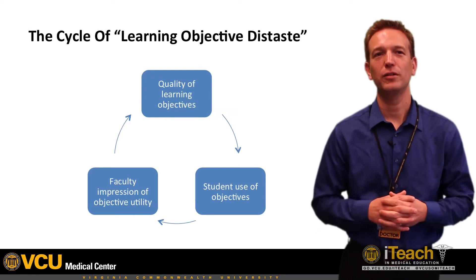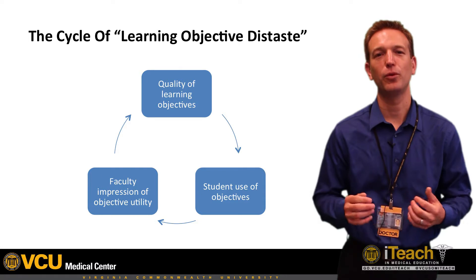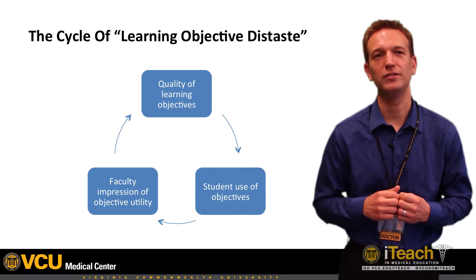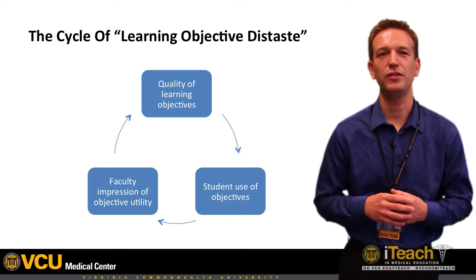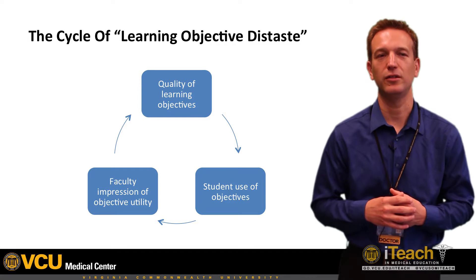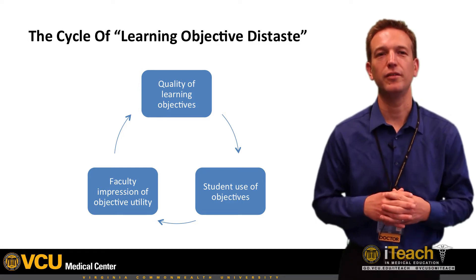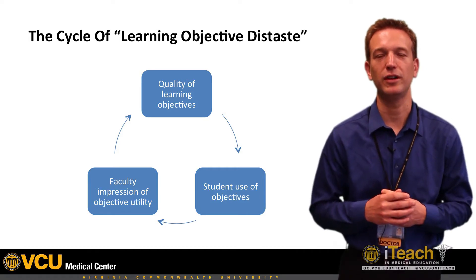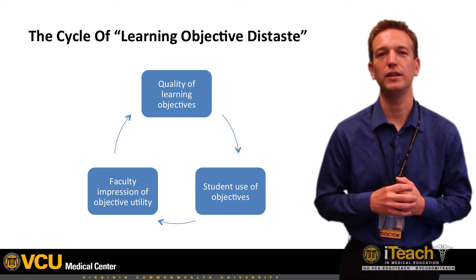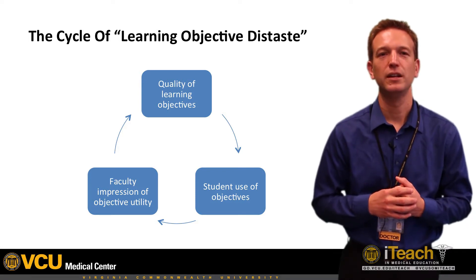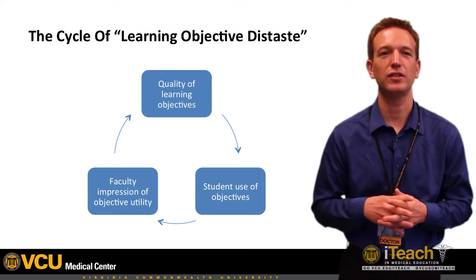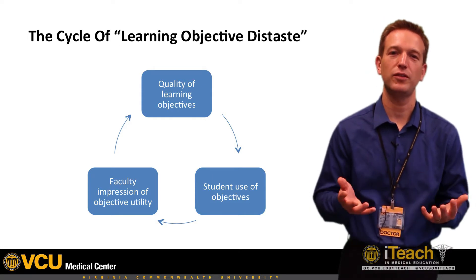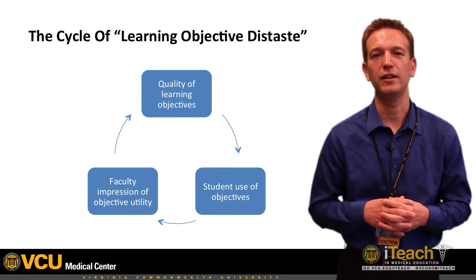I would argue that we are looking at our students' distaste of learning objectives from the wrong vantage point, and that the entire concept of creating learning objectives has become a vicious cycle. Many faculty members feel that students do not use learning objectives to guide their learning. By having a poor impression of their utility, many of us spend a nominal amount of time understanding and developing meaningful learning objectives, which results in predictably poor quality. Students then see no benefit to using these objectives, and the cycle continues from one course or clerkship to the next. Objectives then become a requirement rather than an ally in our teaching.